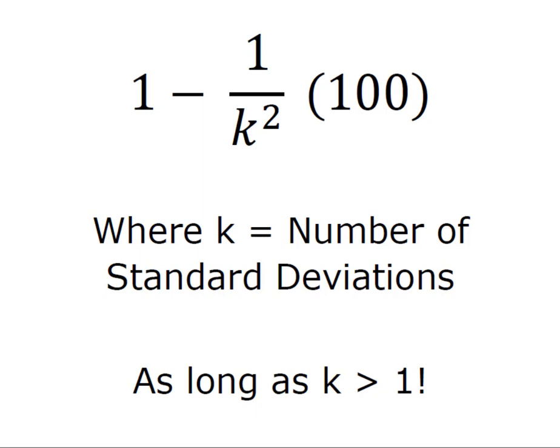And this formula and theorem will apply as long as k is greater than 1. In other words, we have to go further than one standard deviation from the mean, and that's clearly because if I substitute 1 in for k, then 1 squared is 1, 1 divided by 1 is 1, 1 minus 1 is 0, and you can kind of see where the wheels come off. So we'll always be moving further than one standard deviation from the mean.